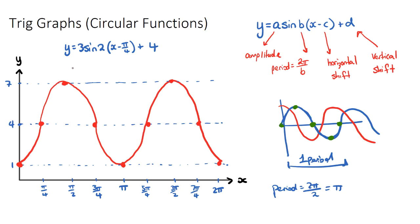In summary: the amplitude is three because it goes up and down three units from its midpoint; the midpoint is the vertical shift, which was four; the period is pi because it's two pi on b; and the horizontal shift tells us where our first dot goes. I encourage you to practice a few of these questions — good luck!